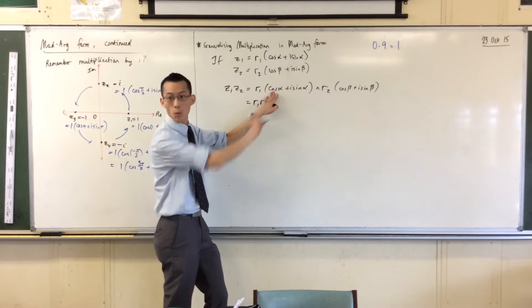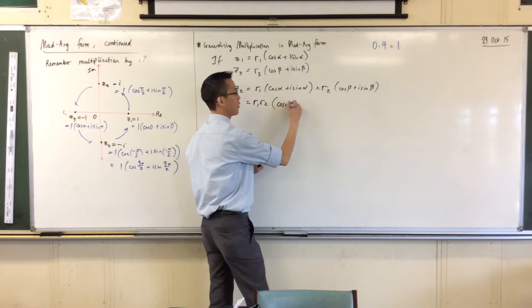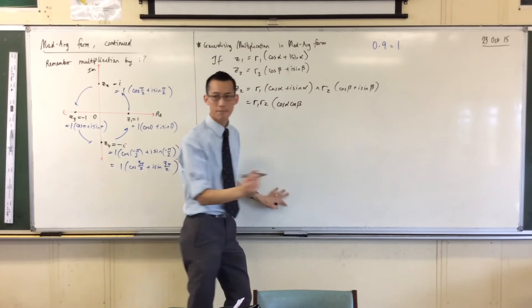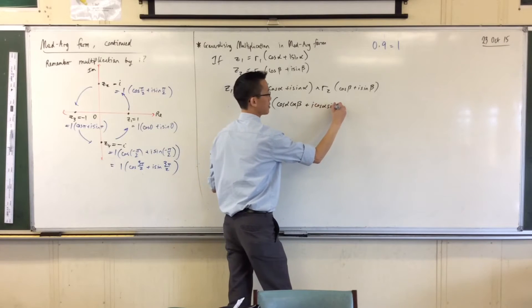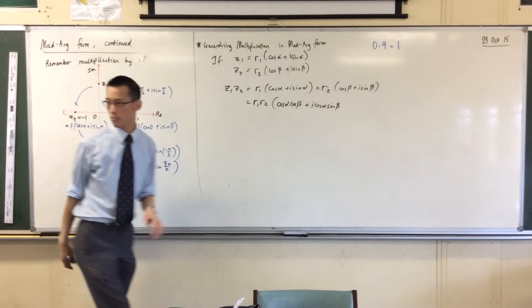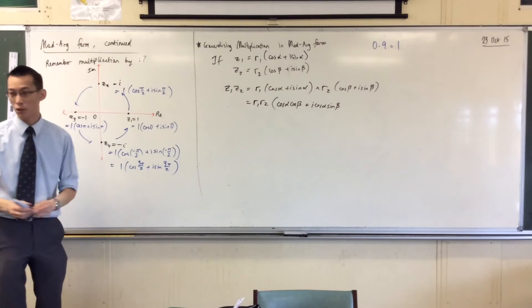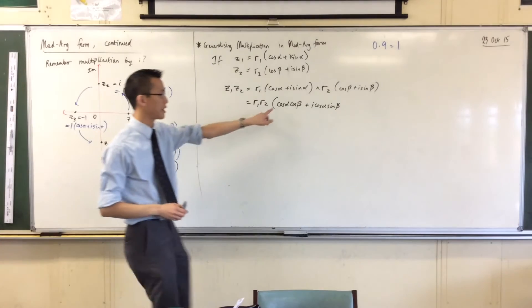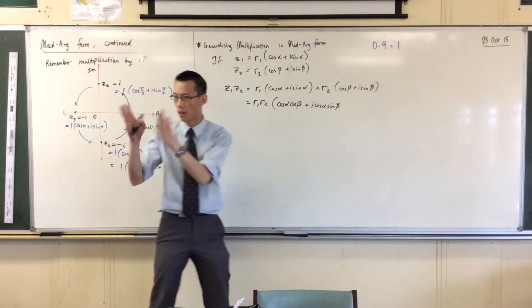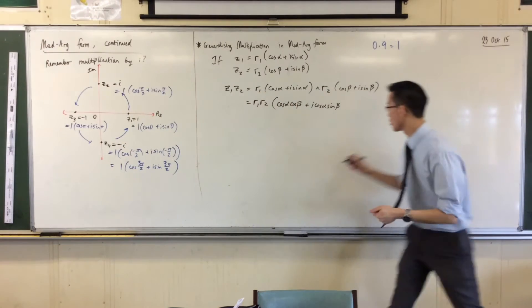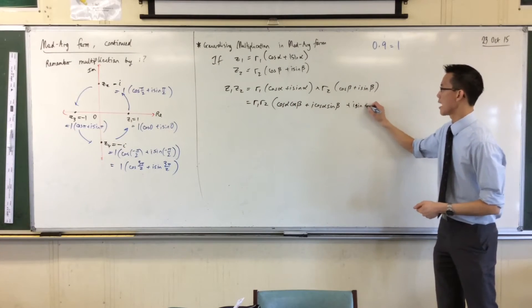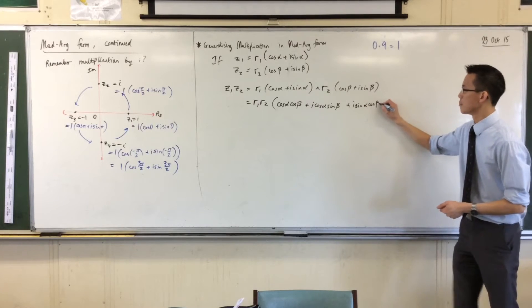First, cos alpha, we'll multiply it by both terms. I get cos alpha cos beta. Then I get i cos alpha sine beta. By convention, I'm putting my i's out the front, and I'm making the angles the order of my trig functions. Then I'll do my second pair. I've got i sine alpha cos beta.